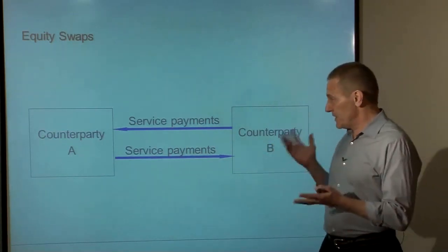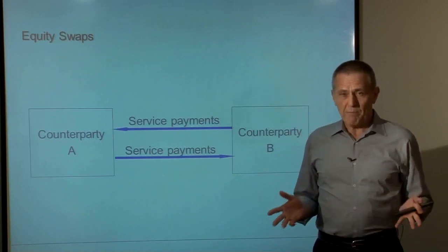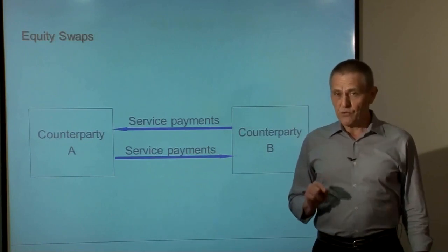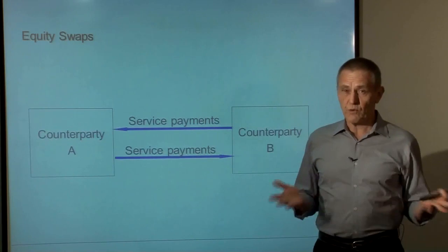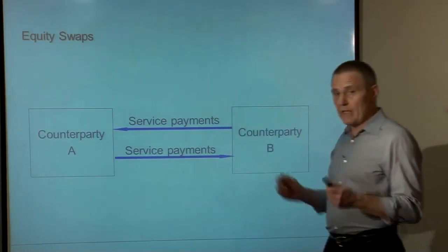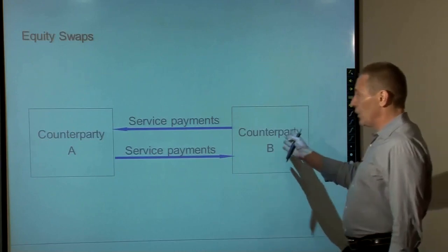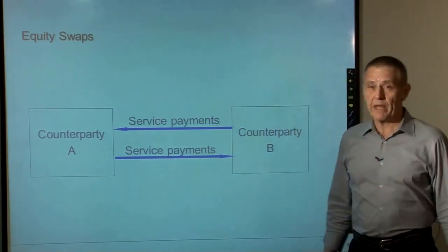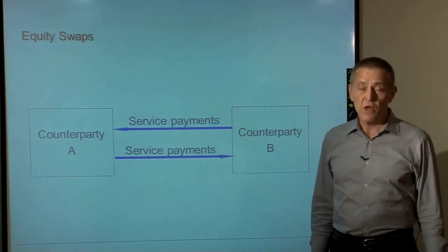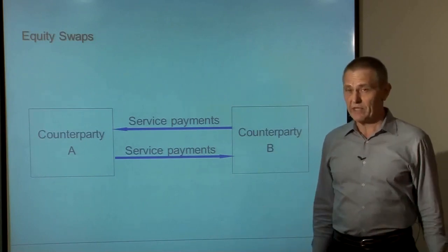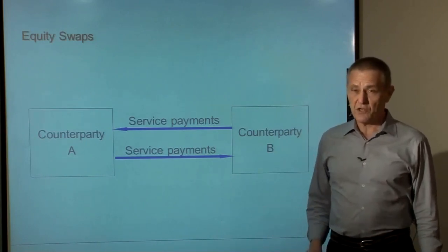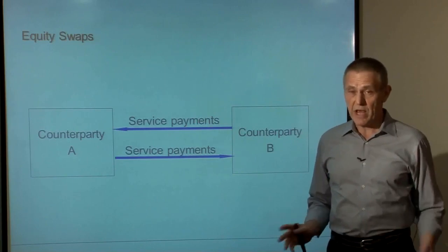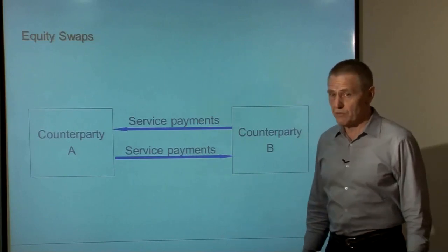A swap is referred to as a swap because the two counterparties are agreeing to exchange risks or exposures. But those risks or exposures are quantified in the form of what are referred to as service payments. One counterparty makes a stream of service payments to the other, in return for which they're receiving from that counterparty service payments tied to something else. Those service payments are oftentimes referred to as legs of the swap. The contracts establish the cash value of each of those streams of service payments and how the gains or losses are recognized by the two counterparties.